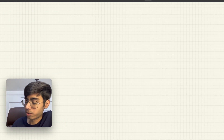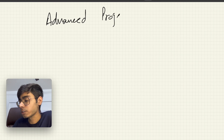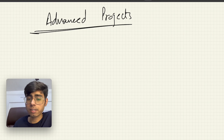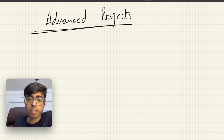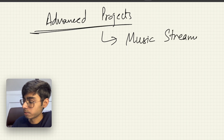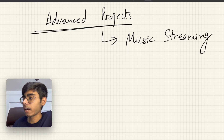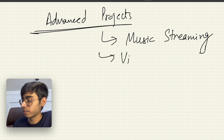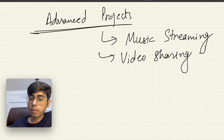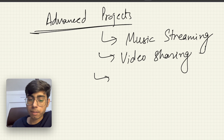Now for advanced projects, I'm going to give you two — or three — project ideas. If you've made these, you qualify as an advanced backend developer. The first is Music Streaming, the second is Video Sharing, and a third option is building a Proximity Service — finding nearby people.